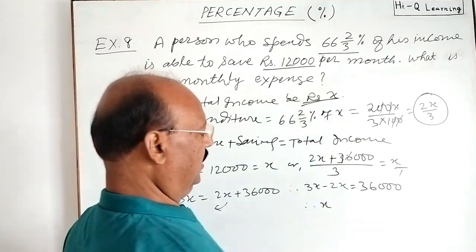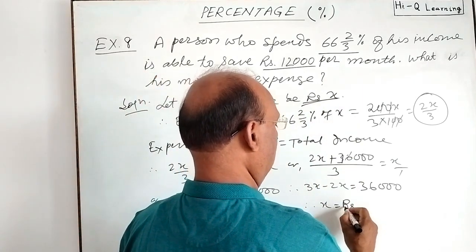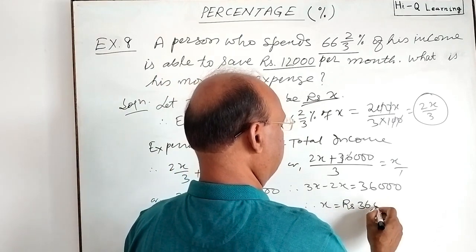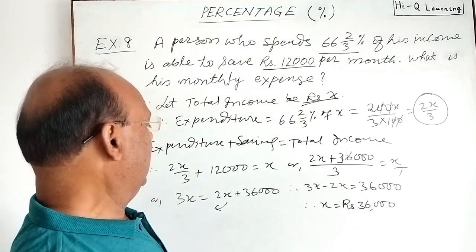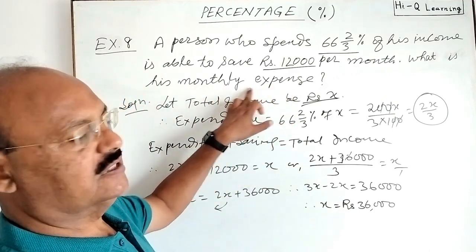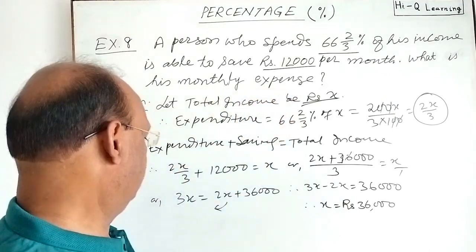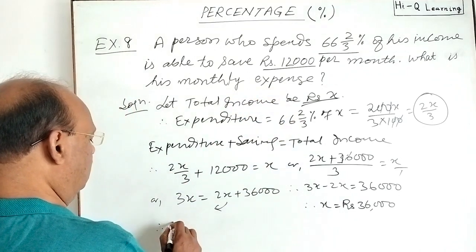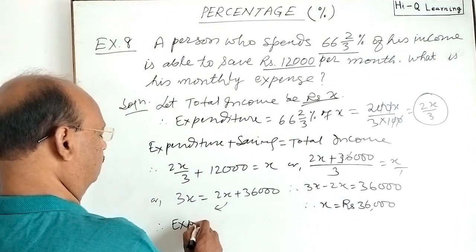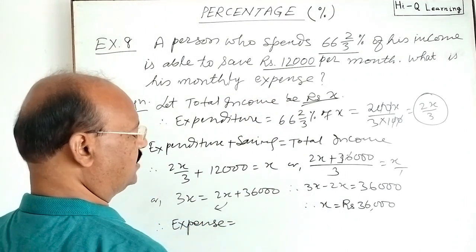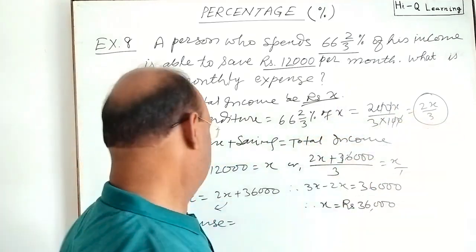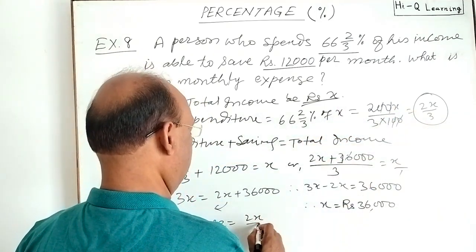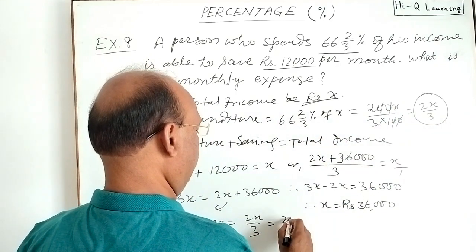Therefore X is equal to 36,000. We have supposed total income X, so X is equal to 36,000.